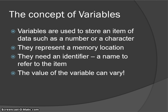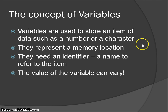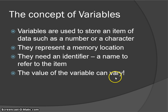I've mentioned variables a lot. The term variable is used to represent a memory location. Variables are used to store an item of data, such as a number or a character — it's something that we are interested in storing. Variables need an identifier, which is just a name given to the variable — it's how it's identified. For example, my identifier is Darren; that's how I'm identified. Values of variables can vary — they can change — and that is a key aspect of a variable.